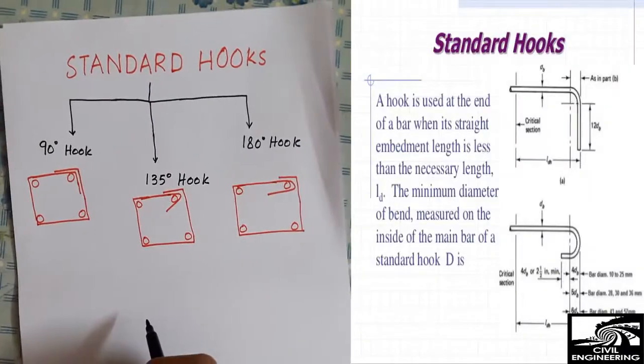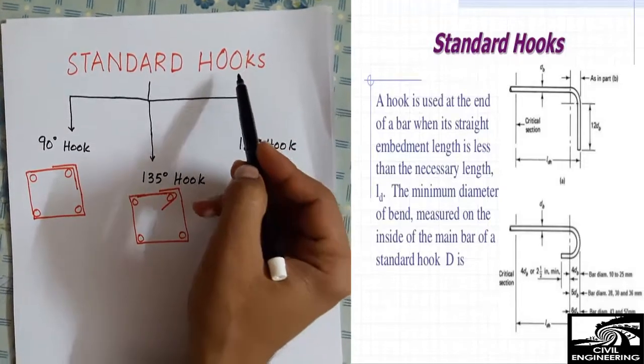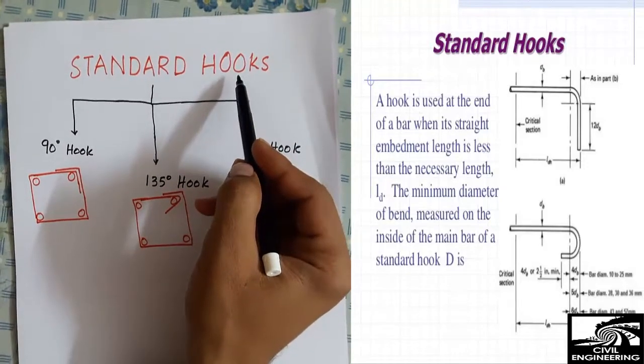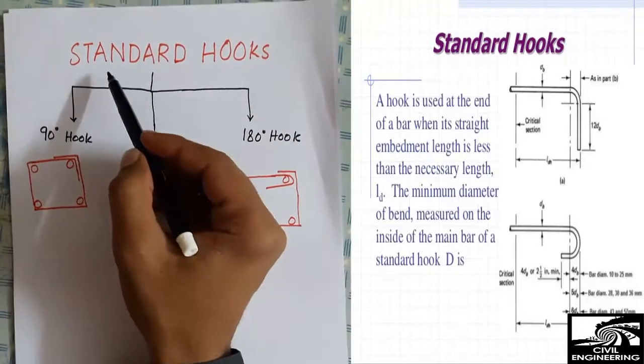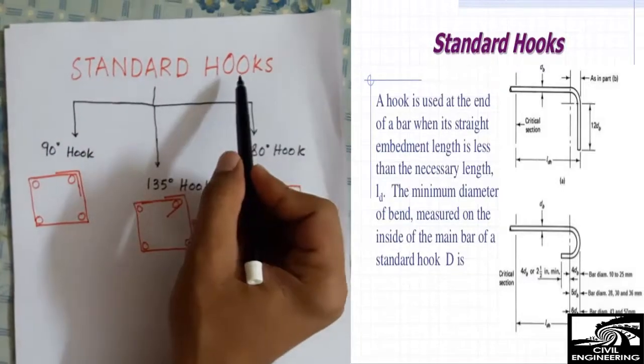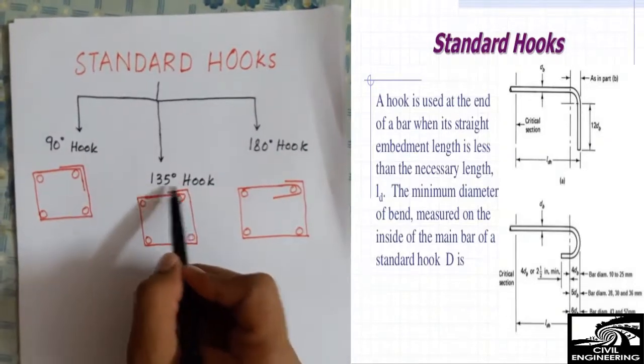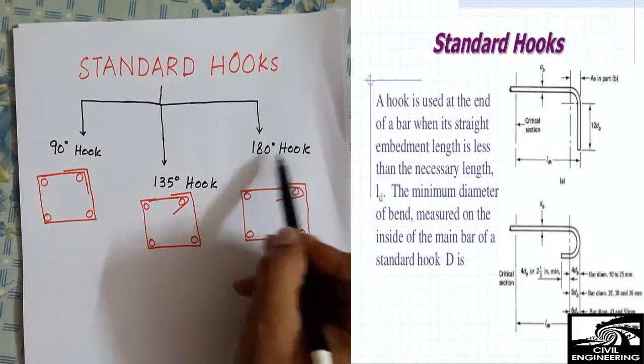As I showed you in 3D, there are three types of standard hooks recommended by the ACI (American Concrete Institute). Here I'm showing you what these three standard hooks are: the first one is 90 degree hook, the other one is 135 degree hook, and third one is 180 degree hook.